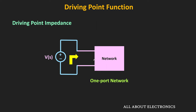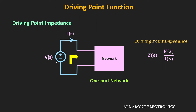Basically, the driving point impedance is the input impedance of the network seen through the voltage source. For a one-port network, if V is the voltage at the port and I is the incoming current, then the driving point impedance is equal to V divided by I. Here, both V and I are in the S-domain, since our network consists of resistors, capacitors, and inductors. If it is a purely resistive network, there is no need for S-domain representation. Since both V and I are in the S-domain, the driving point impedance will also be in the S-domain.